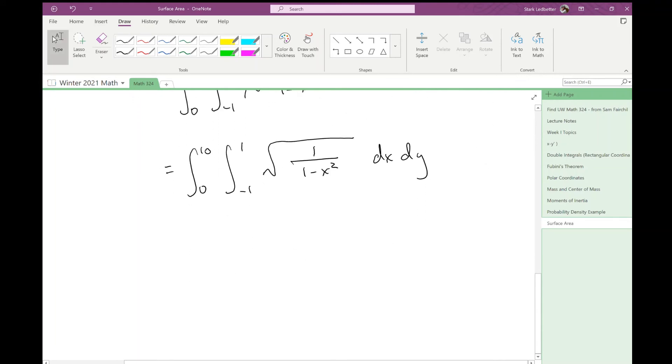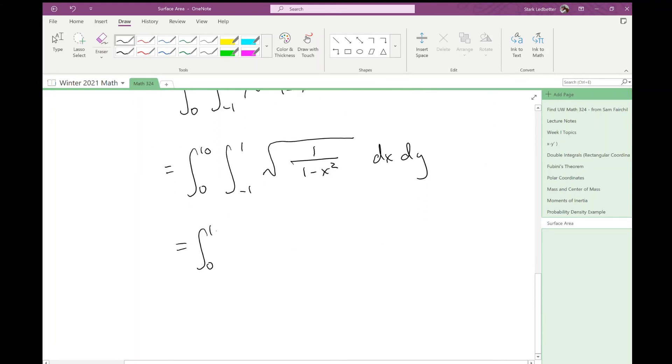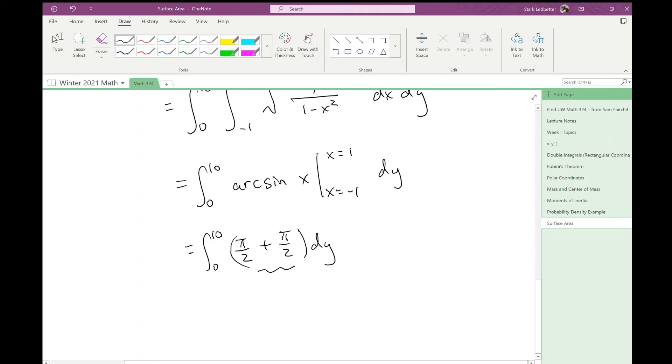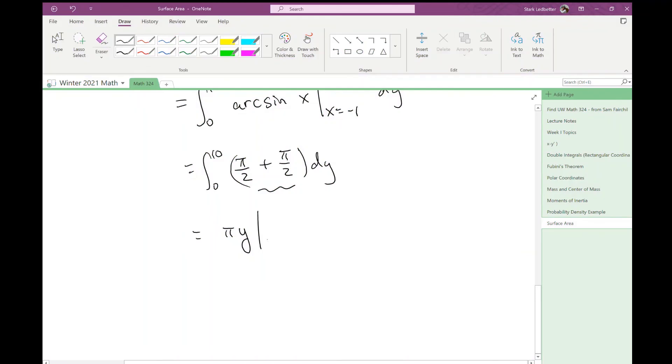Okay, and then this is the time, if any, to memorize these integrals. So I did not have them memorized before now, but this is arc sine of x. x goes from negative 1 to 1, and then I still have a dy out here. Let's see, sine of pi over 2 is 1. Sine of negative pi over 2 is negative 1, so I have to subtract negative pi over 2, which means I'm adding a pi over 2, dy. So this is a total of pi, and then I'm integrating a constant, so pi y from 0 to 10, so this is 10 pi.